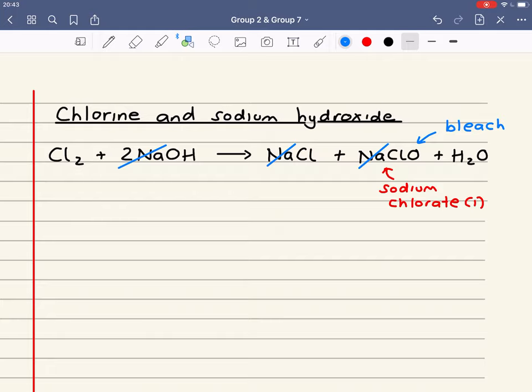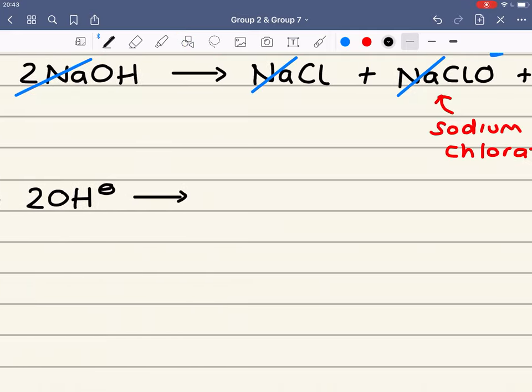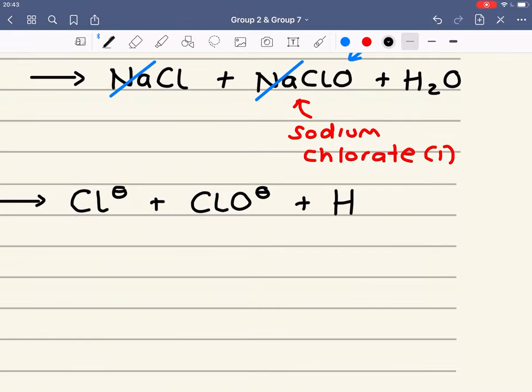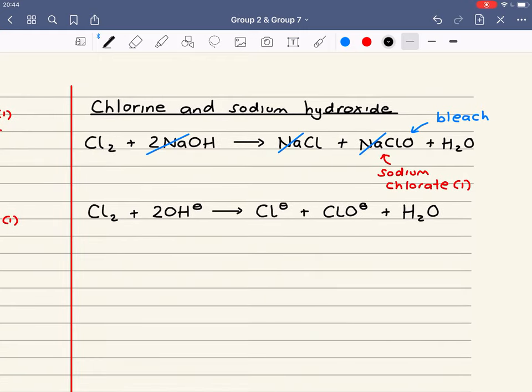We can remove those from the equation. And that will give us the ionic equation as follows. I've got Cl2 now plus two hydroxide ions. And now we get similar products to what we've got with chlorine and water. We've got our chloride ion, our chlorate one. But the difference now is we've now got this additional product of water. This, again, is a disproportionation reaction.